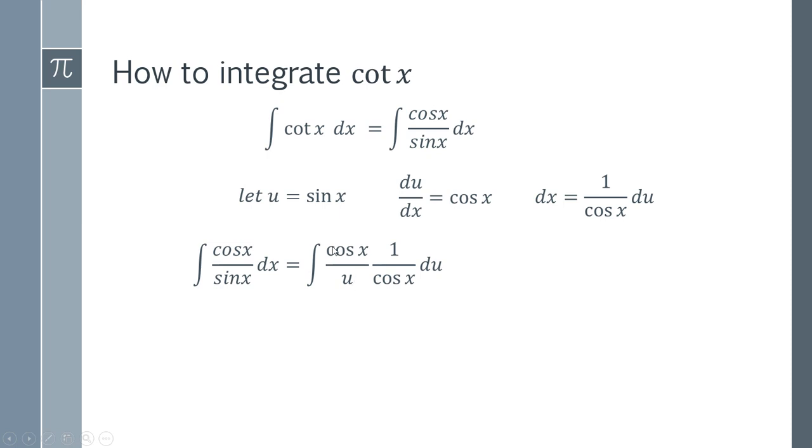And you will notice that the two cosines are going to cancel out. So if we do that cancellation, we're left with a rather simple integral. We're just doing the integral of 1 over u.